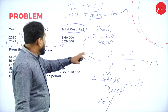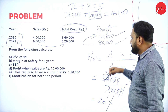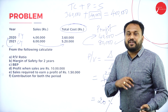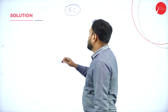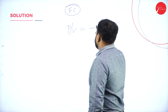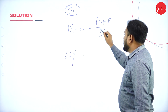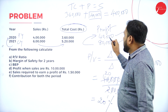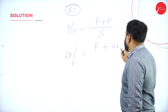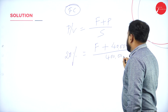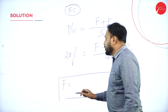For two-year problems: MOS = Profit / PV for each year. For BEP, you need to find Fixed Cost first. Use the formula PV = (F + P) / S. With PV = 20%, take any one year — say 2020: Profit = ₹40,000, Sales = ₹4,00,000. Cross-multiply to get Fixed Cost. That is how you find fixed cost from two-year data.